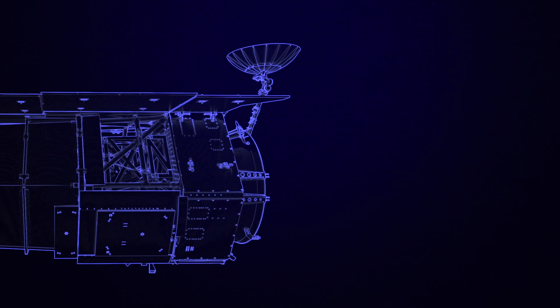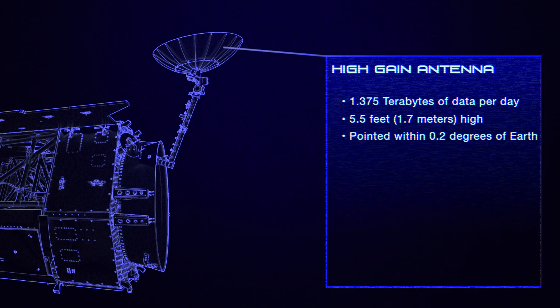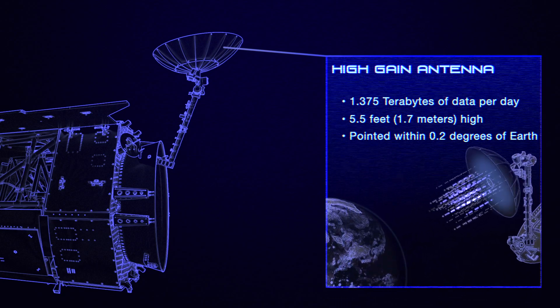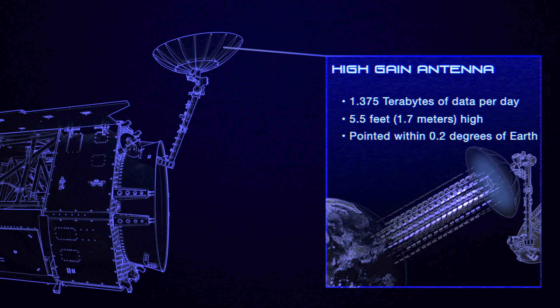At Roman's back is its primary means of communication with Earth, the high-gain antenna. This antenna will be responsible for sending nearly 1.4 terabytes of data to ground stations every day. That's the equivalent of 460 hours of streaming video.